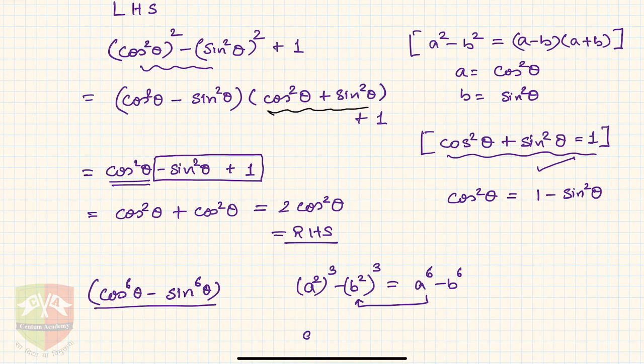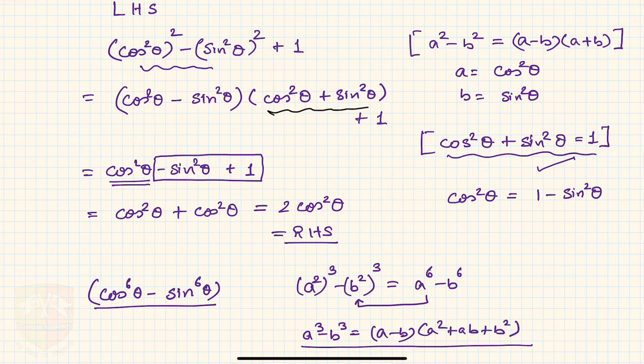And now you can use the identity a³ - b³ = (a - b)(a² + ab + b²) and hence proceed like that. So always keep in mind that the moment there are higher powers you know that algebraic identity is going to be used in that problem.